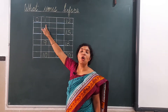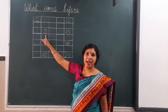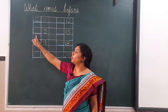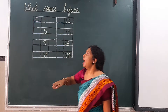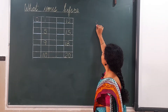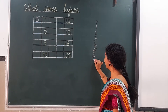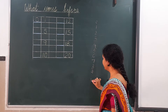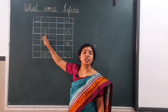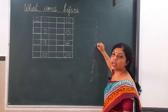Next it is 5. What comes before 5? First, we can write the number line: 0, 1, 2, 3, 4, 5, 6, 7, 8, 9, and 10. Here it is written 5 and we have to search which number comes before 5. Then 4 comes before 5.